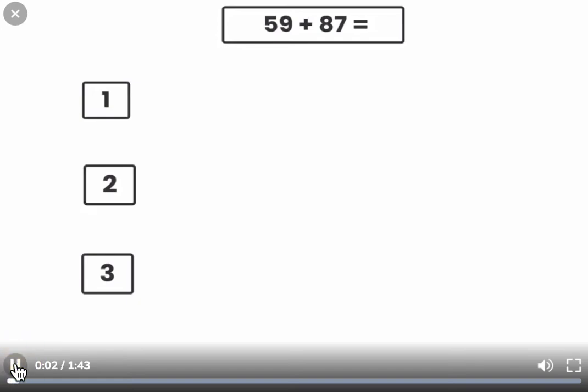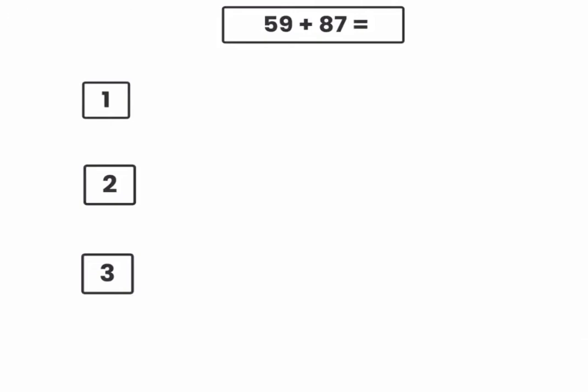I can use compensation in one of three ways for this problem, 59 plus 87. The first way is I can move some of 87 over to make 59 an easier number. I can add 1 from 87 to make 59, 60. And so my problem becomes 60 plus 86. This is an easier problem because 0 plus 6 is 6, 60 plus 80 is 140.